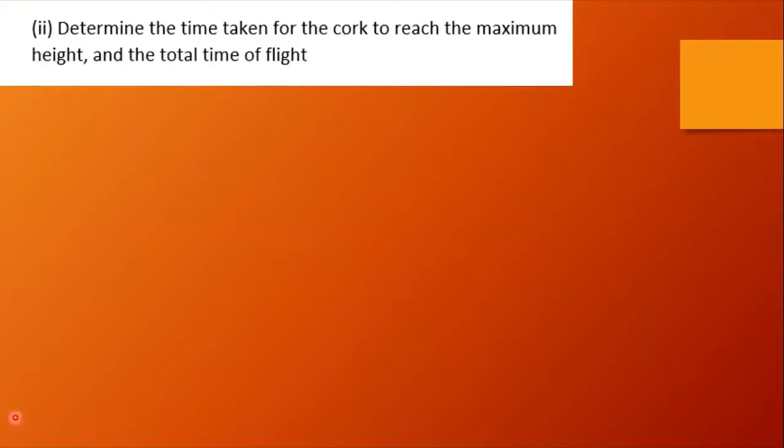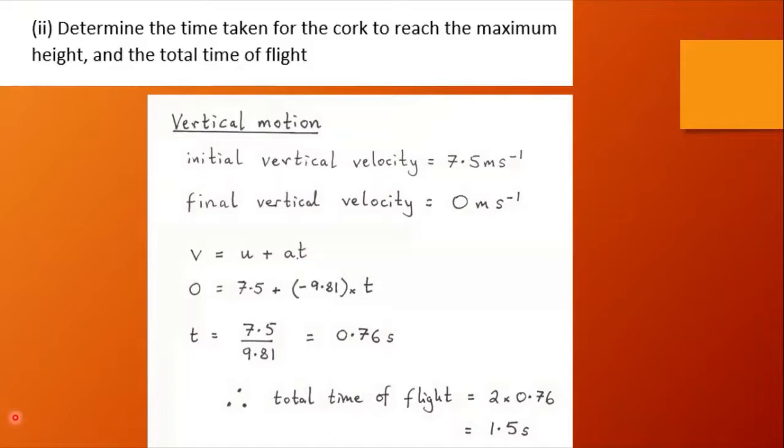We're here now to determine the time taken for the cork to reach the maximum height and the total time of flight. We've got the initial vertical velocity and when it reaches its maximum height the final vertical velocity would be zero. v equals u plus at, a is minus 9.81, so that time to go up to its highest point is 0.76.